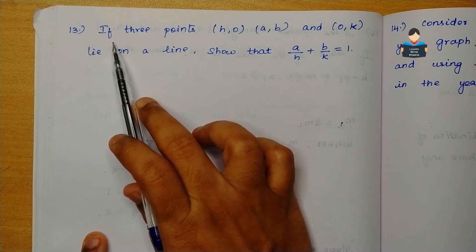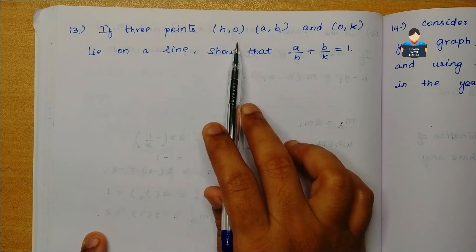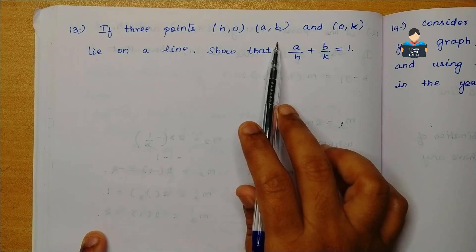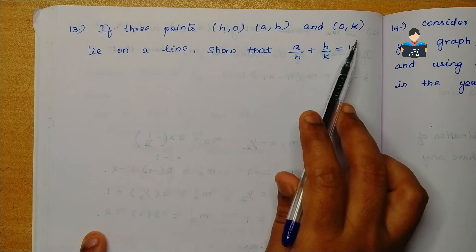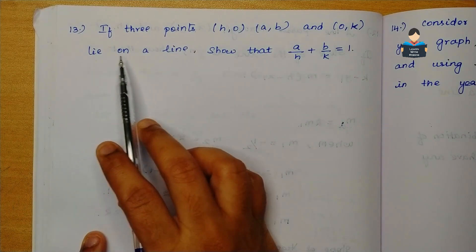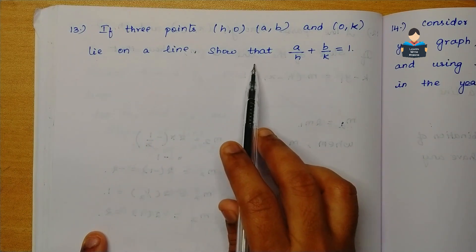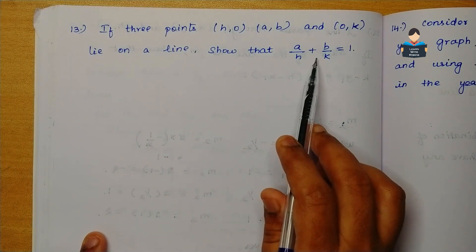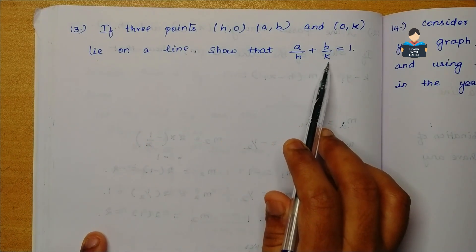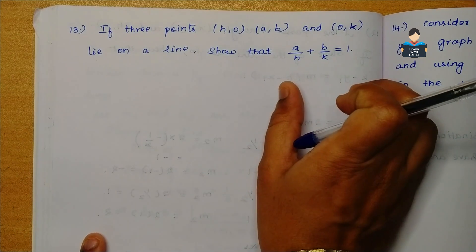13th question: If 3 points H(h, 0), A(a, b), and B(0, k) lie on a line, show that a by h plus b by k is equal to 1.